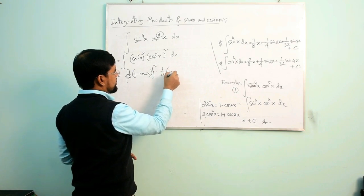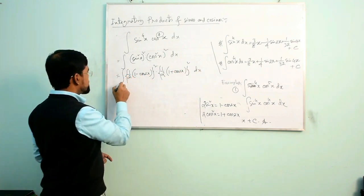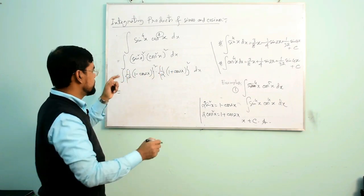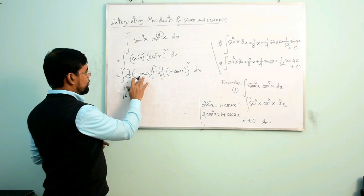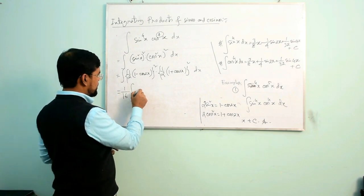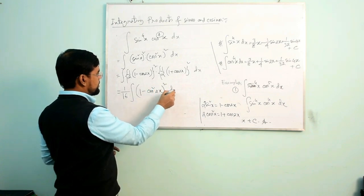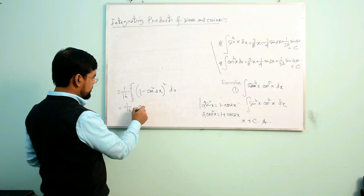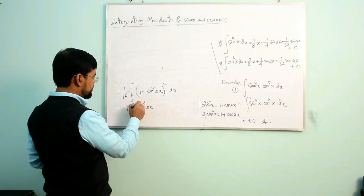Multiplying these out, we get (1/16) times the integral of (1 − cos 2x)(1 + cos 2x) squared, which simplifies using the difference of squares: (1 − cos 2x)(1 + cos 2x) = 1 − cos²2x = sin²2x. So the integral becomes (1/16) ∫ sin⁴2x dx.